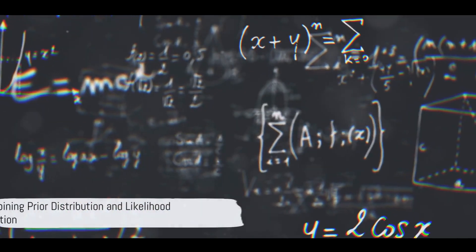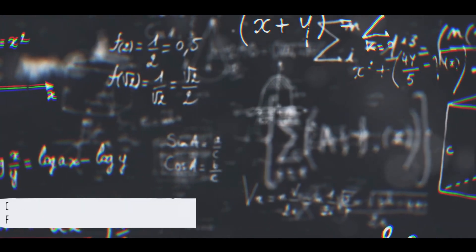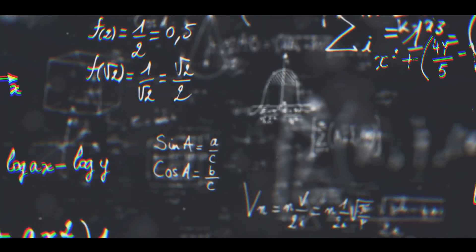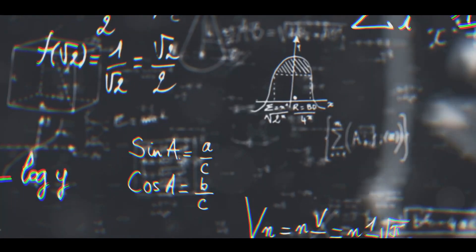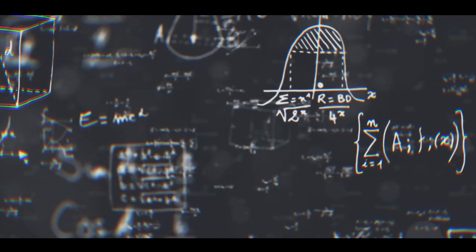The third and final step is to combine the prior distribution and the likelihood function. This is done using Bayes' theorem, which gives us the posterior distribution, our updated belief about the parameters after we've seen the data.